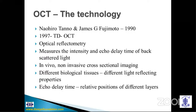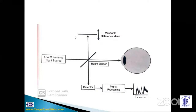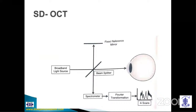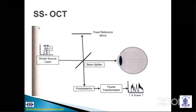The first commercially available OCT was time domain OCT, using a movable reference mirror. Light from a low-coherent superluminous diode was split by a beam splitter — one beam going to the eye, the other to a movable reference mirror — and interference patterns were used to generate the echo delay time. The movable reference mirror restricted scan speed to 400 A-scans per second. Spectral domain OCT used a fixed reference mirror and a spectrometer to split the wavelength, greatly increasing scan speed to 27,000 A-scans per second. The latest swept source OCT also uses a fixed reference mirror, does away with the spectrometer, and uses a high-speed detector reaching 100,000 A-scans per second.